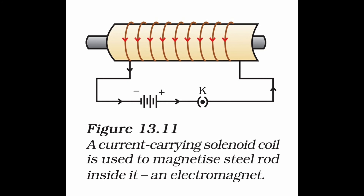Electromagnets are used in many electrical and electronic devices such as electric bells, loudspeakers, telephone instruments, electric motors, electric relays, generators, and transformers. Surgeons use magnets to remove iron or steel splinters from wounds or the eye. Large electromagnets in cranes lift and transport heavy steel machines — loading by switching current on, unloading by switching it off. They are also used as separators to separate non-magnetic substances from metal scrap.